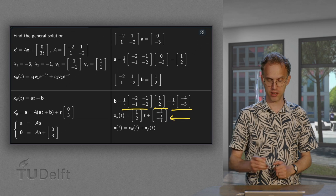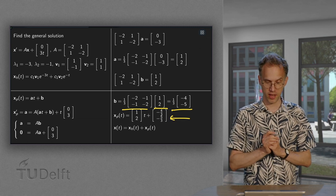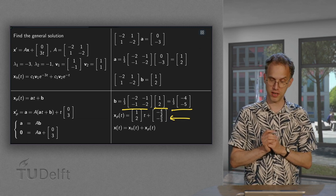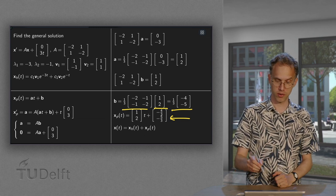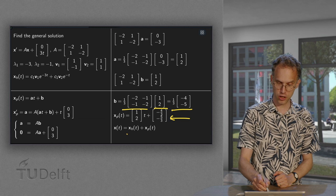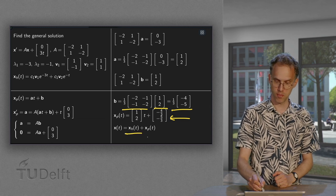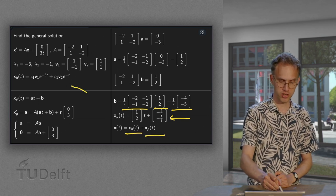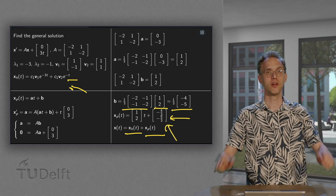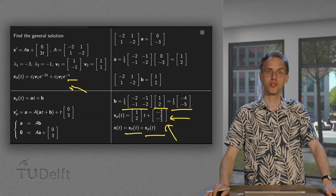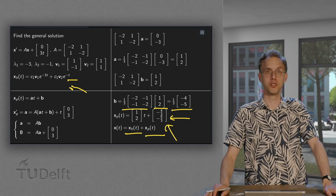And, you can compute this straightforwardly as 1 third times (-4, -5). So, there we have our particular solution: a times t plus our vector b, which we just determined. And our total solution, you also know it. Our total solution is the sum of the homogeneous solution plus the particular solution. Homogeneous solution there, particular solution over here. So, there we go. There we have the solution of our non-homogeneous problem.